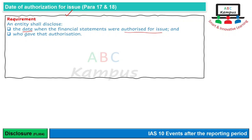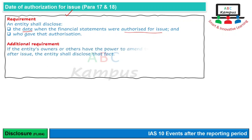इसमें एक additional requirement भी है कि अगर entity के owners और others have the power to amend the financial statements after issue, the entity shall disclose that fact. अब क्या पाकिस्तानी law ये allow करता है?